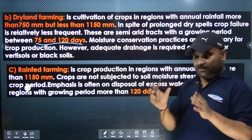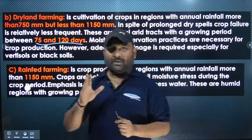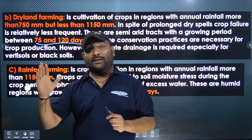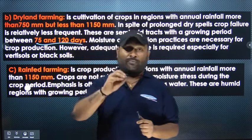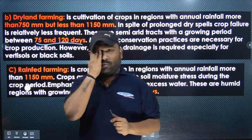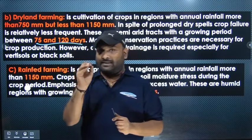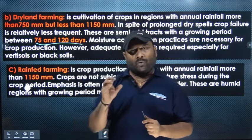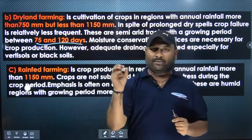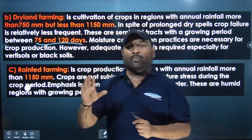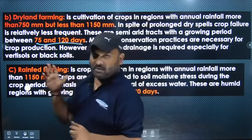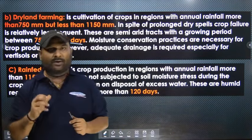In brief: dry farming is in the arid zone with annual rainfall less than 750 mm, growing season less than 75 days, crop failure due to dry spells or drought, and we use soil moisture conservation methods. Dryland farming is in the sub-arid zone with rainfall 750–1150 mm and growing season 75 to 120 days.